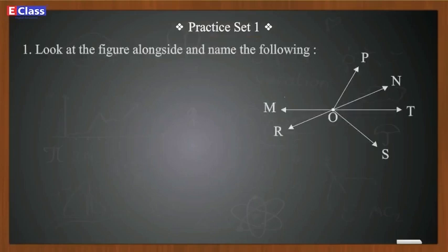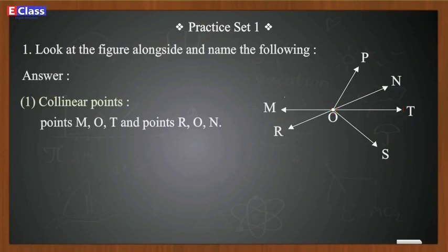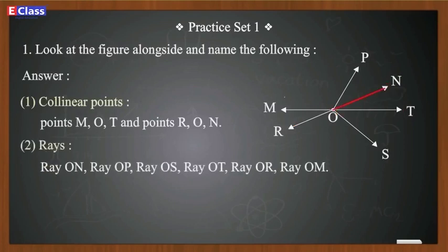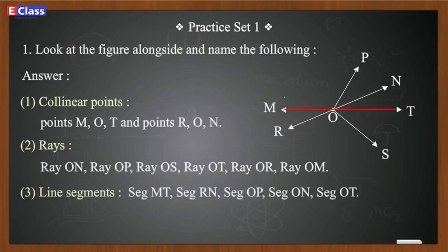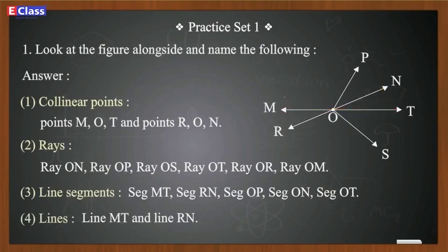Students, let's solve practice set 1.1. Question one: look at the figure and name the following. Answer: one — collinear points: points M, O, T and points R, O, N. Two — rays: ray ON, ray OP, ray OS, ray OT, ray OR, ray OM. Three — line segments: segment MT, segment RN, segment OP, segment ON, segment OT.